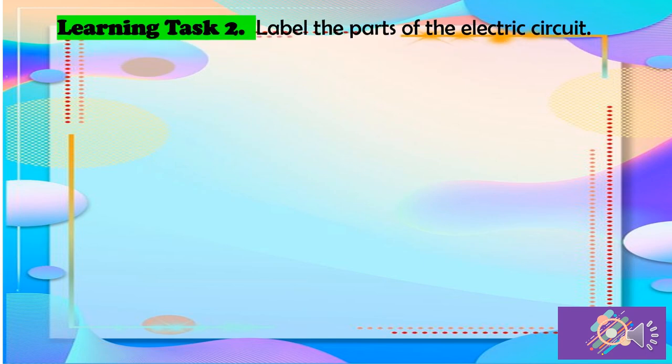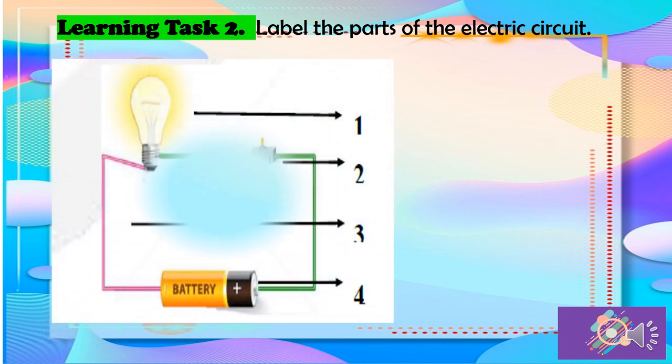For learning task 2, label the parts of the electric circuit. So we have 1, 2, 3, and 4.